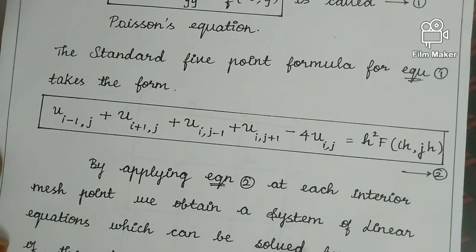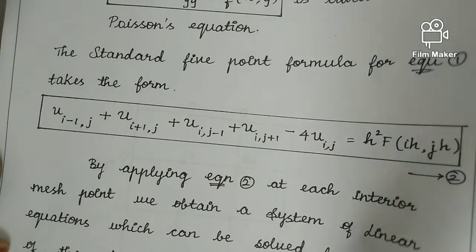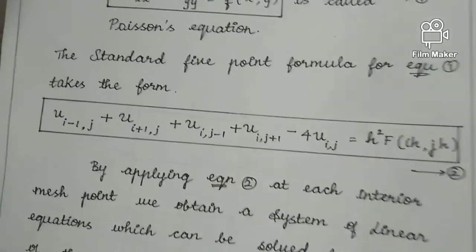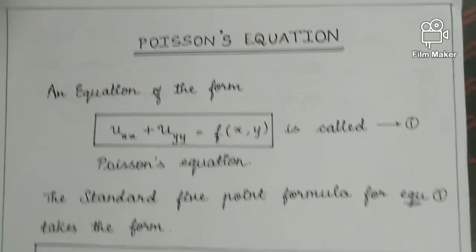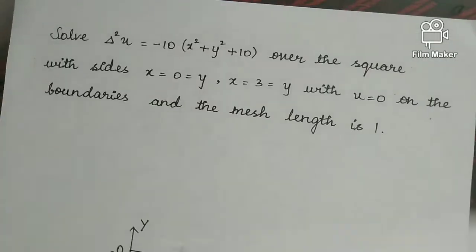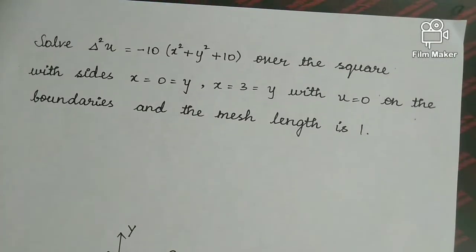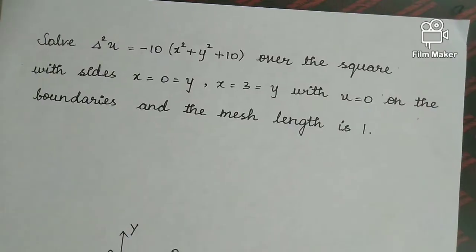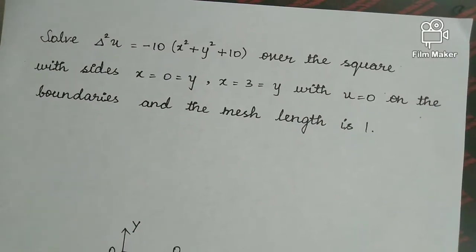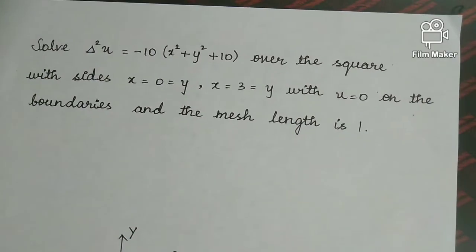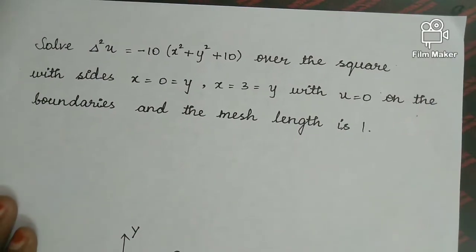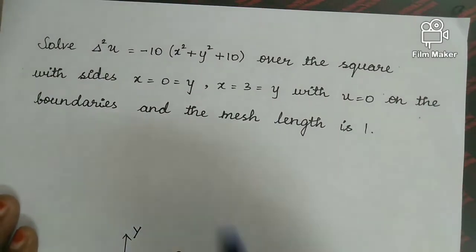After substituting the values, we get equations involving u1, u2, and u3. We then solve these using one of the iteration methods. Any method can be followed — Gauss-Seidel, Gauss-Jacobi — any method can be used to solve the equations.